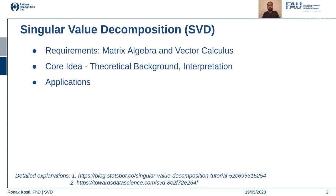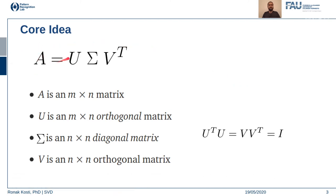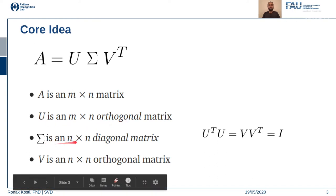So what is SVD? Any real matrix A can be decomposed into three matrices: U, Sigma, and V-transpose. A is an m×n real matrix, U is an m×n orthogonal matrix, Sigma is an n×n diagonal matrix, and V is an n×n orthogonal matrix. We will look into the details of what these are, but this is the basic definition of singular value decomposition.